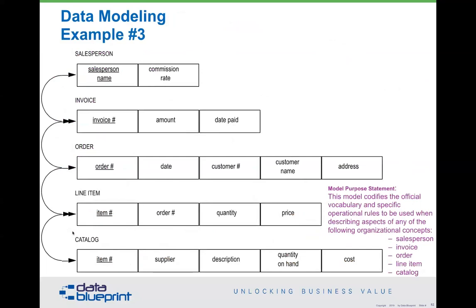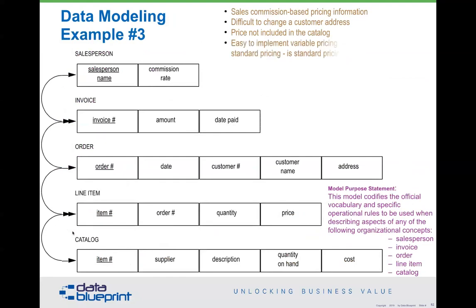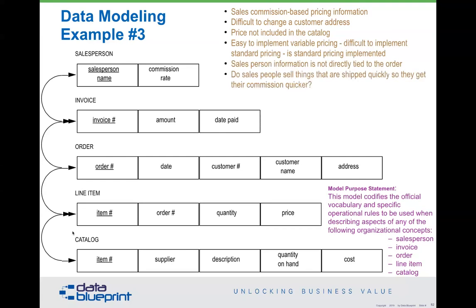Here's another example: sales, people, invoice, orders, line items. What you can tell from here is that there's sales commission-based pricing information, it's difficult to change a customer address because the customer address appears on the orders rather than a central place, the price is not included in the catalog — meaning we're dealing with every customer individually — it is easy to implement variable pricing and difficult to implement standard pricing. Salesperson information is not tied directly to the order.